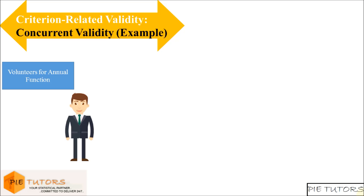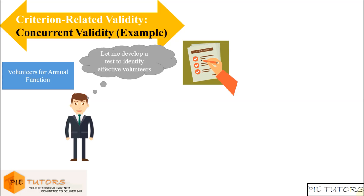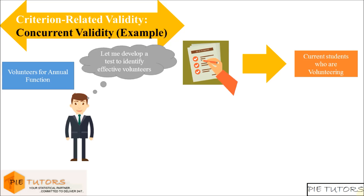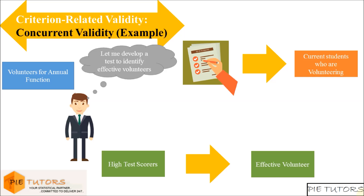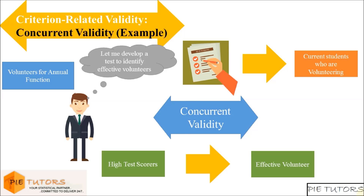For example, say a school teacher needs more volunteers for the upcoming annual function. She decides to use a test to determine who can volunteer effectively, and administers it to students currently working with her. She then checks whether students who score high on her test are the same students who are effective volunteers. In this example, she is trying to establish concurrent validity of the test she has developed.